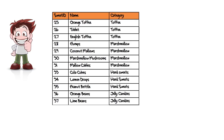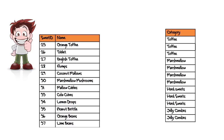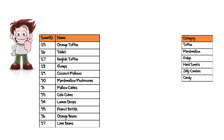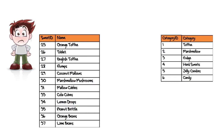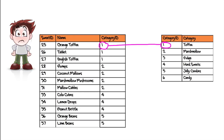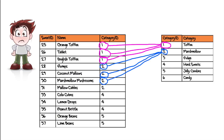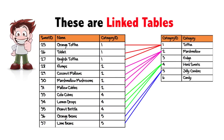Bob has an idea. Instead of storing everything in one table, he could use two — he could put the sweets in one table and the categories in another. But how would he know which sweet belonged to which category? If he added a key to the category table and also added the same key to the sweets table, he could use the key values from one table to link to the other. This is an example of linked tables.